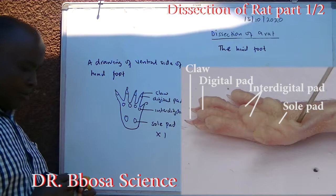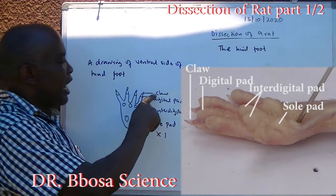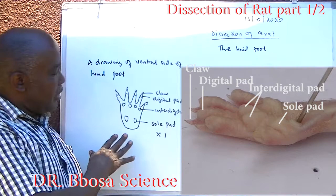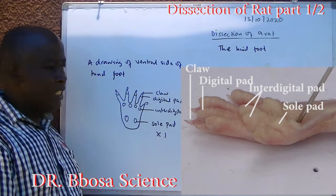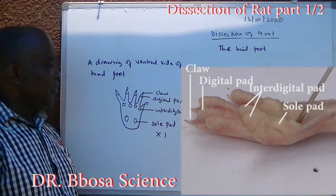The ventral view of the hindfoot has five digits, each carrying a claw and a digital pad, with interdigital pads between the digits and solar pads on the sole. The pads increase friction and also reduce sound when the rat is moving. The claws are used for defence — to scratch the enemy — and also for digging burrows. The digits are spread for stability.